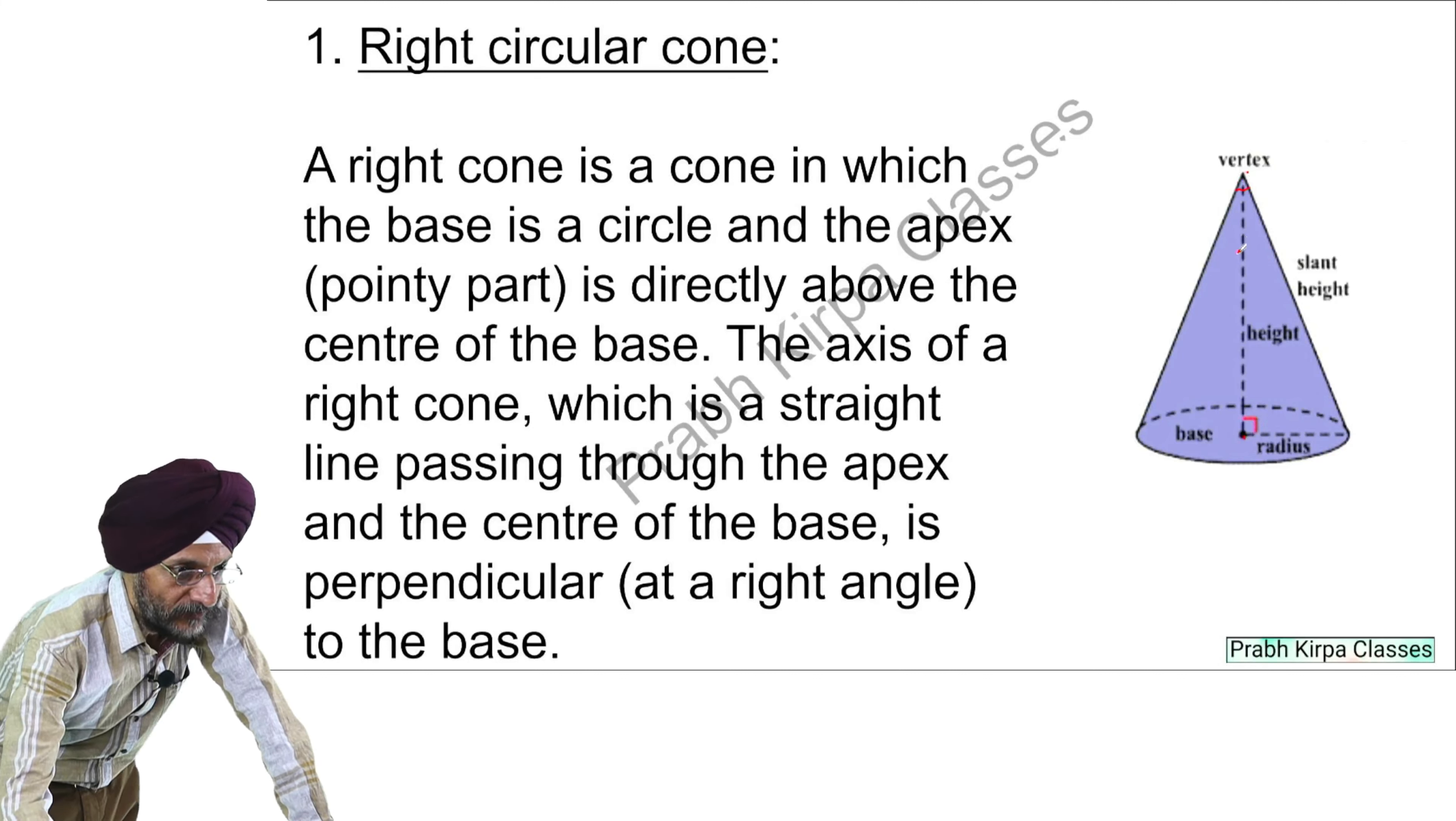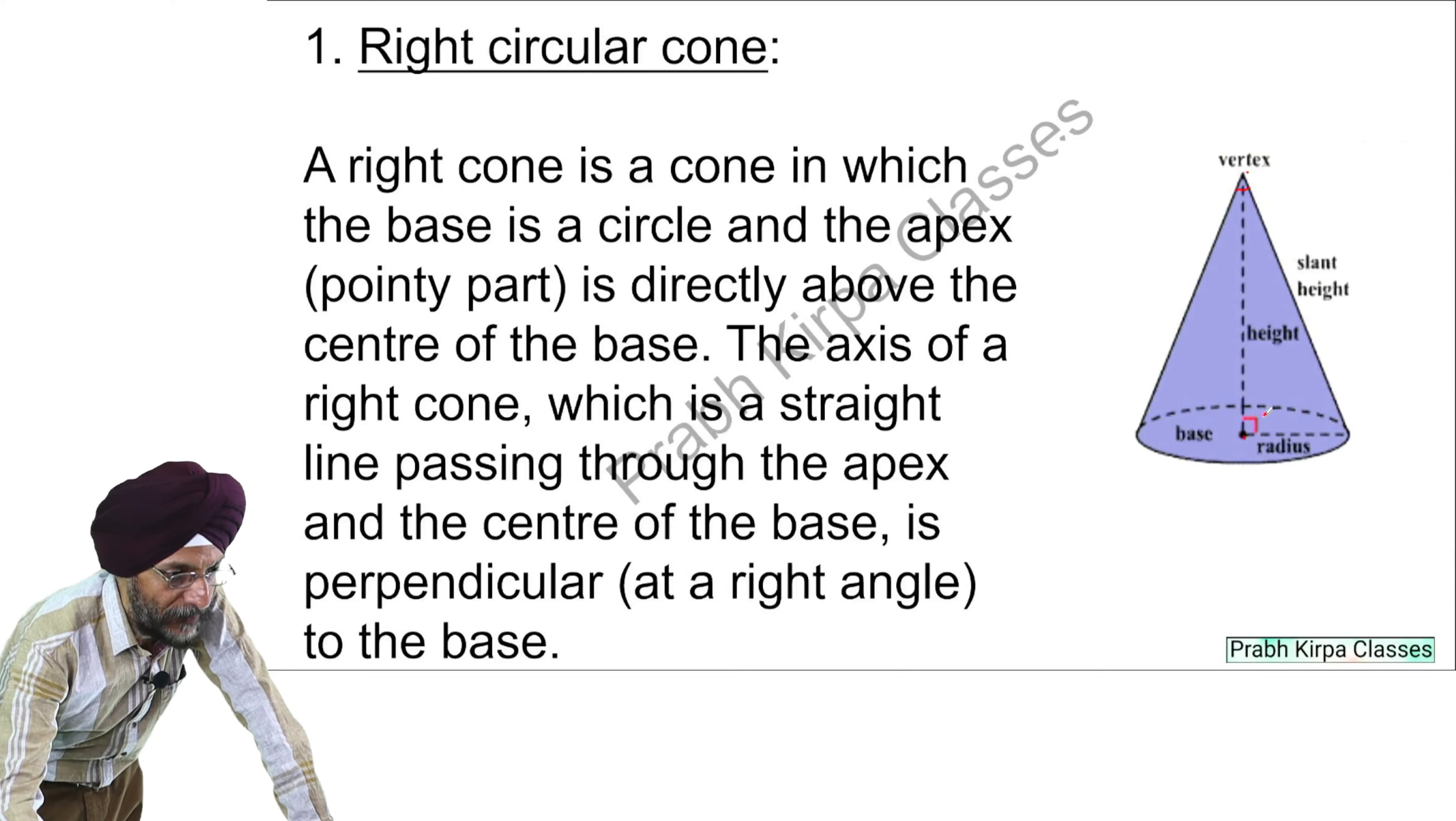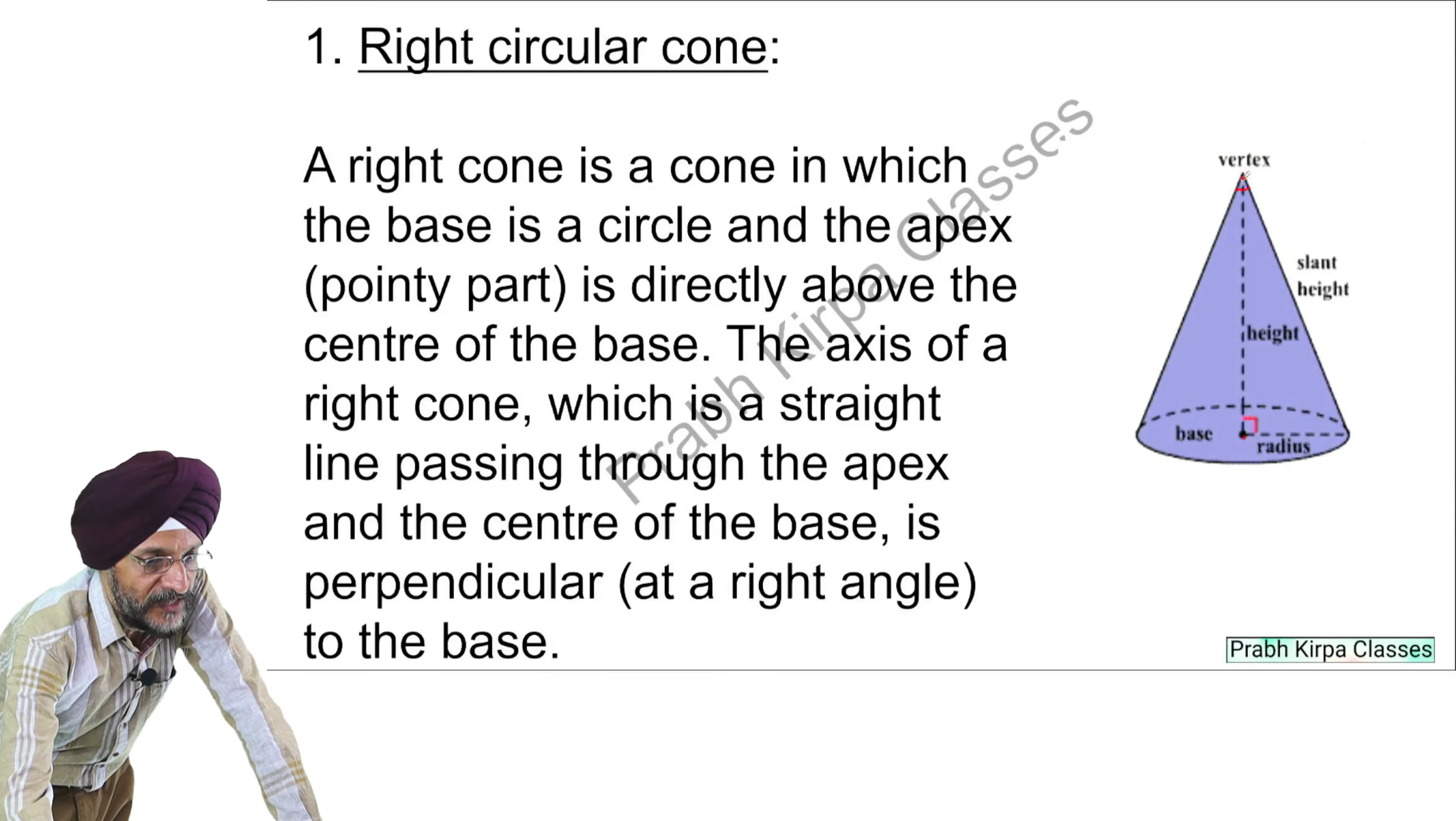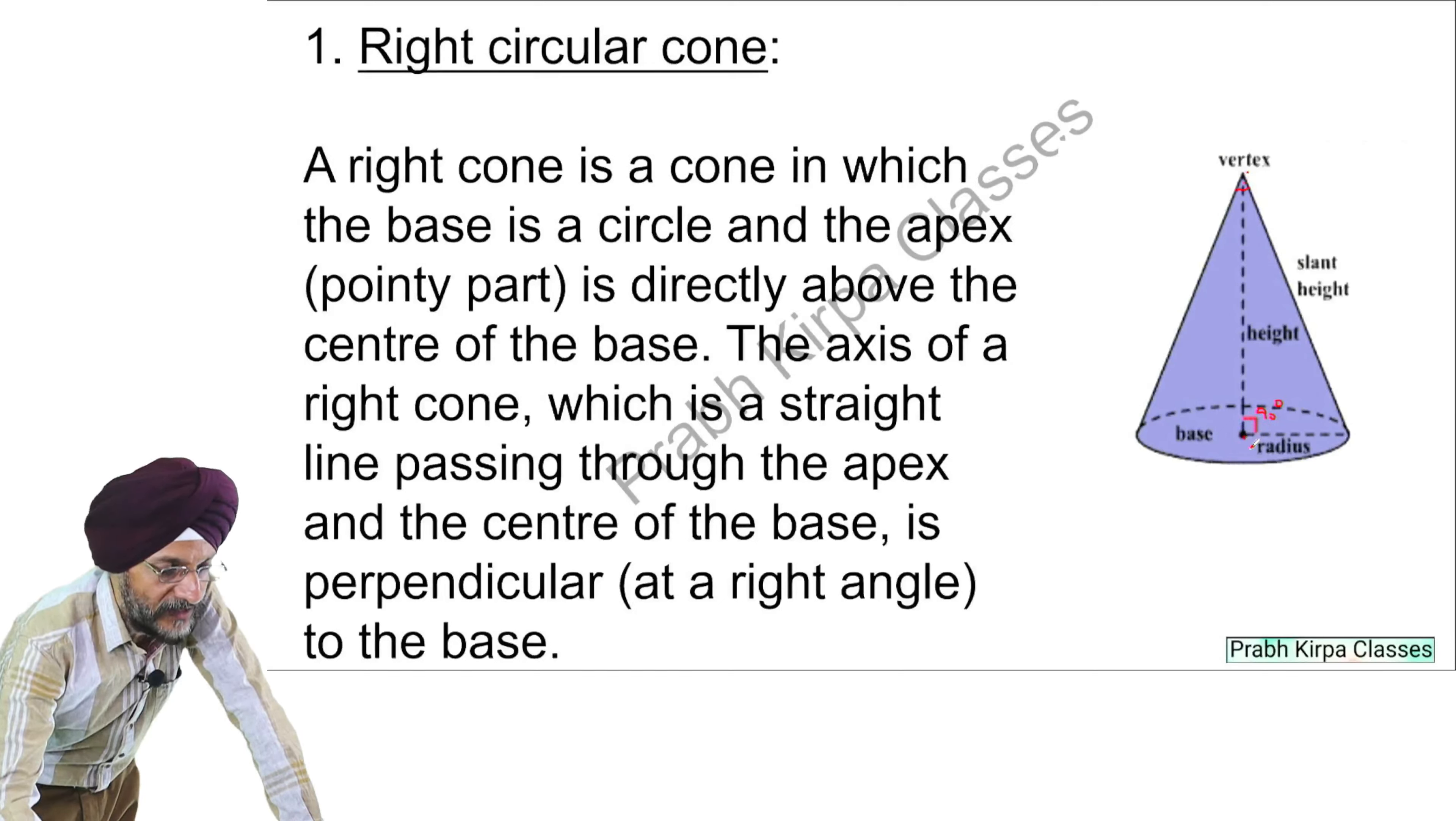The axis of the right cone is a straight line passing through the apex and the center of the base and is perpendicular to the base. It means that this line which is connecting the center of the base with the pointy part forms a 90 degree angle at the base.